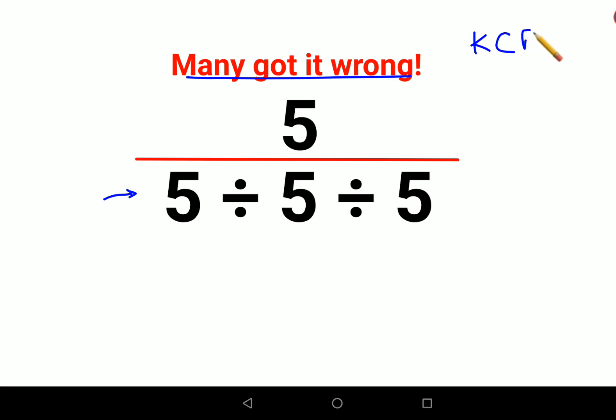You change the division sign into multiplication and flip the next number. So flipping 5 gives you the reciprocal of 5, which is 1 upon 5. Similarly, we will do the same thing again.